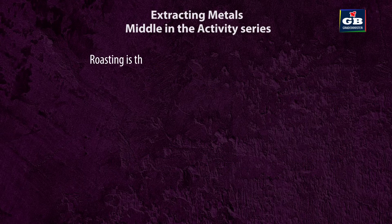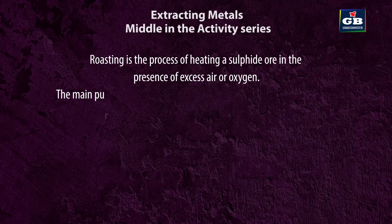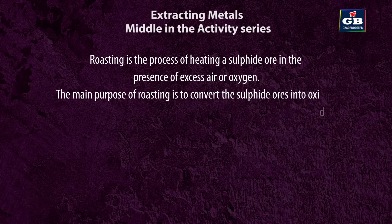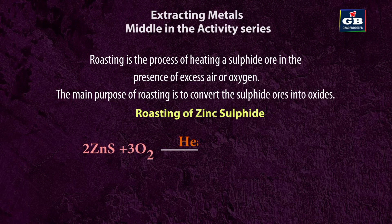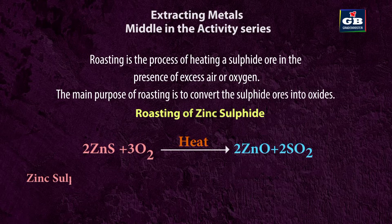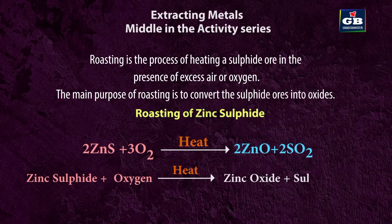Roasting is the process of heating a sulfide ore in the presence of excess air or oxygen. The main purpose of roasting is to convert sulfide ores into oxides. For example, roasting of zinc sulfide: 2ZnS + 3O₂ → 2ZnO + 2SO₂ (on heating). In this reaction, zinc sulfide is heated in excess oxygen and converted into zinc oxide, while releasing sulfur dioxide as a byproduct.